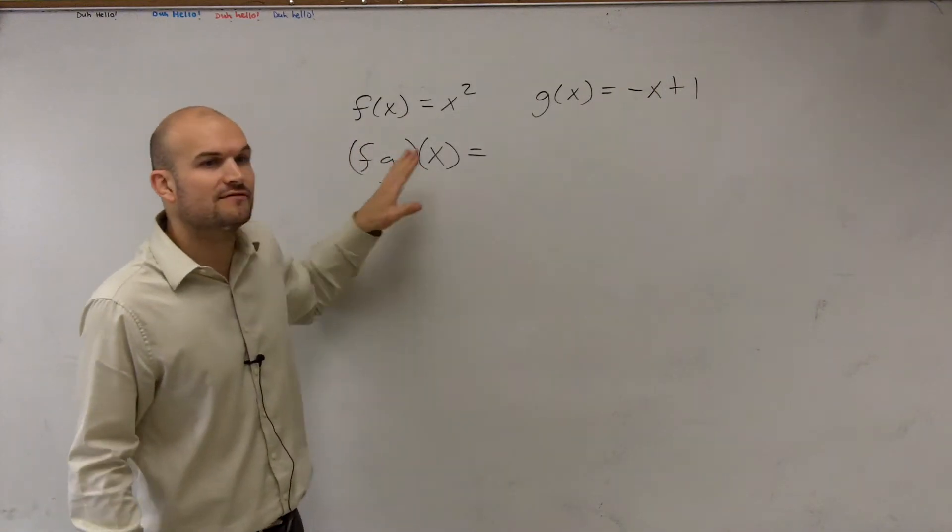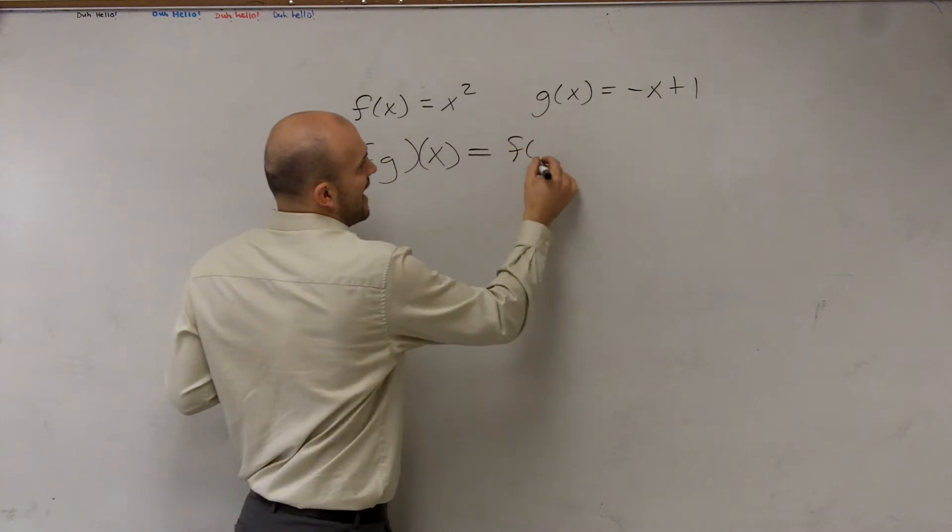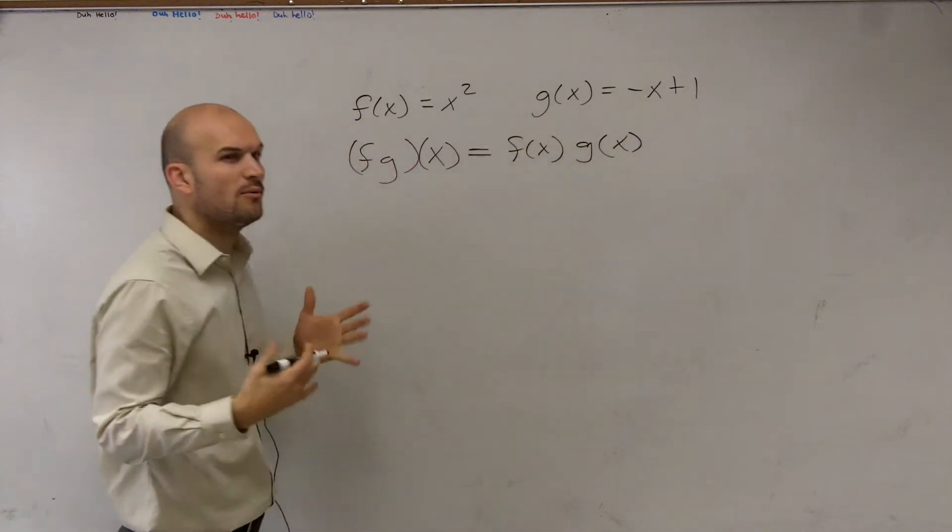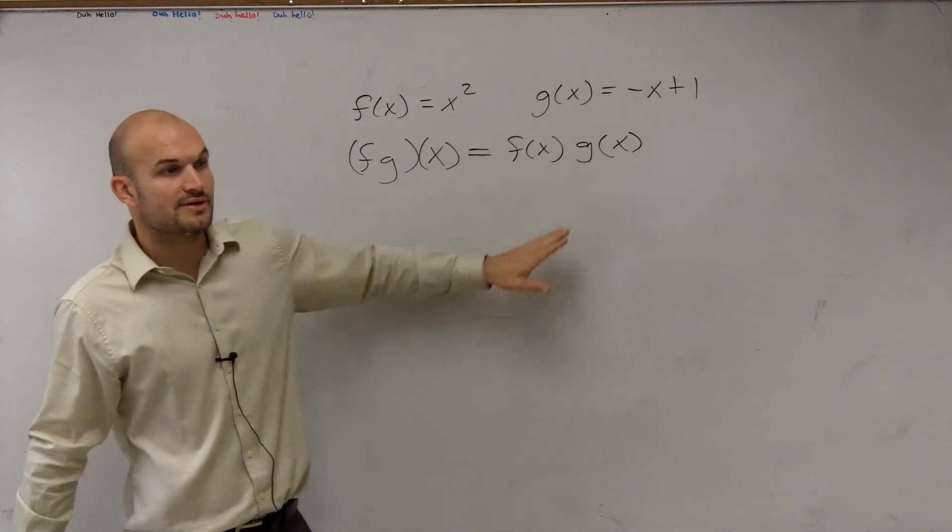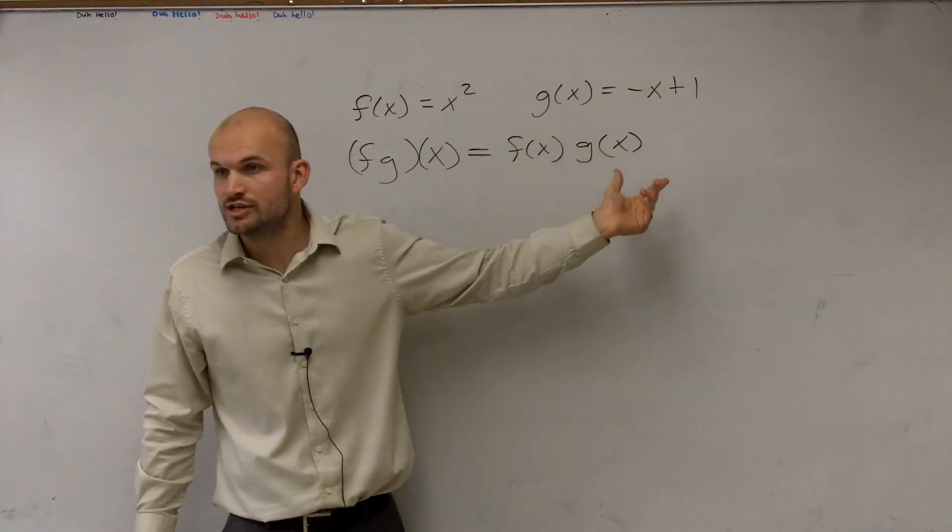So when written like this, f·g of x, or f times g of x, what that's going to represent is f of x times g of x. And one thing I want you guys to note, I'll get to that in a second. So what we're simply doing is just multiplying our function f of x times our function g of x.